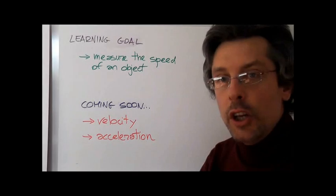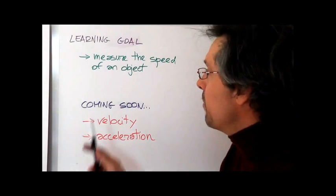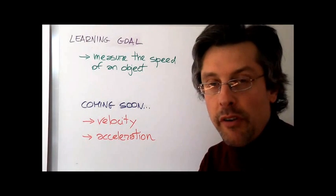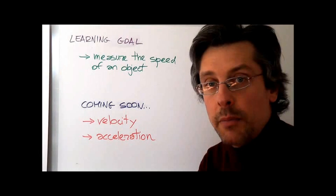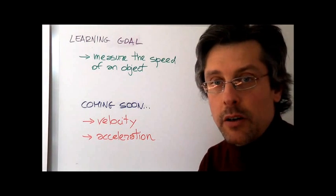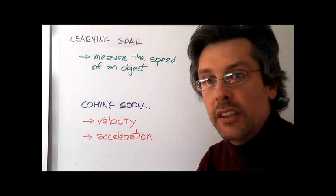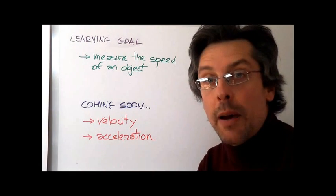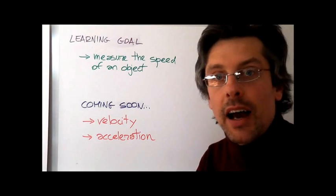So what was the learning goal of this lesson? By the end of this lesson, you should be able to measure the speed of an object by using the formula we've seen at the beginning, or to work out distance and time by using the magic triangle. Coming next, we will see velocity and the difference between speed and velocity. And finally, what happens when speed or velocity change—that is, acceleration.